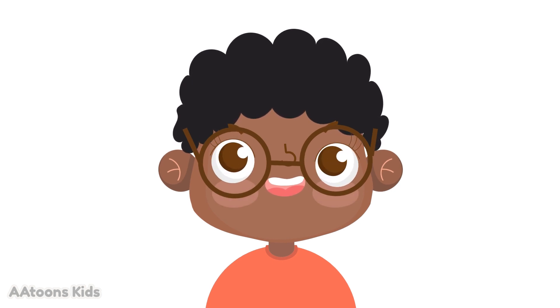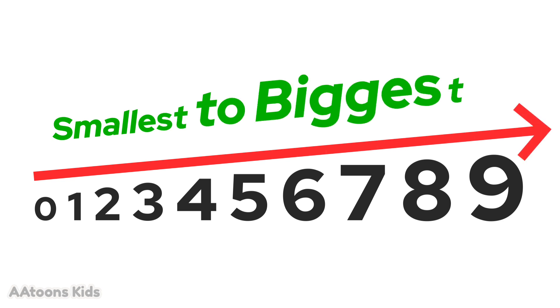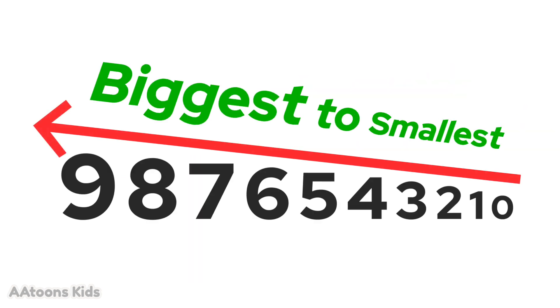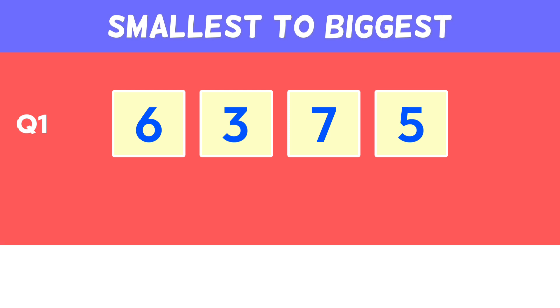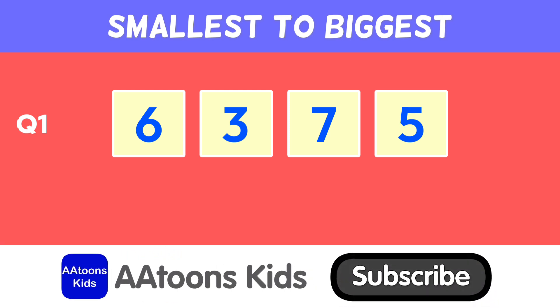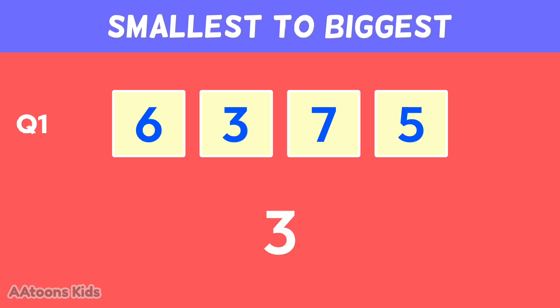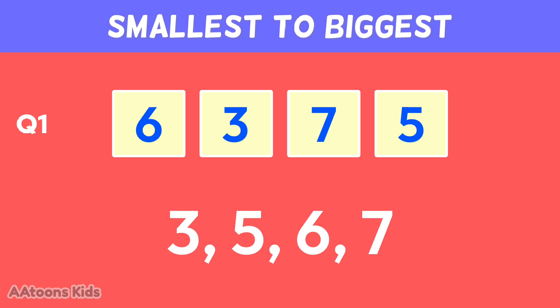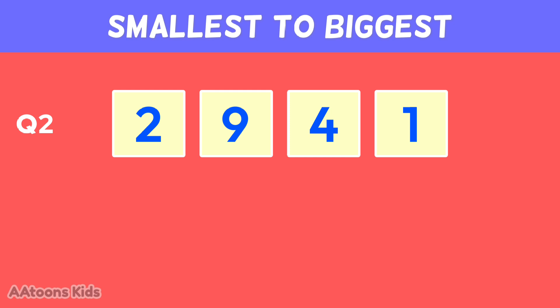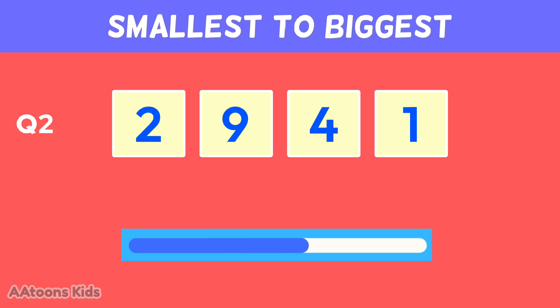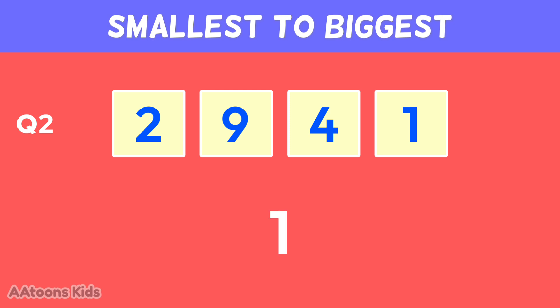Hello kids! In this video we will learn how to put numbers in order from the smallest to the biggest, and from the biggest to the smallest. Arrange these numbers from smallest to biggest: three, five, six, seven. One, two, four, nine.